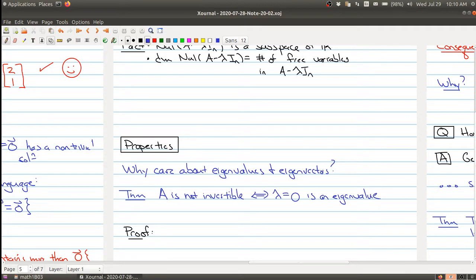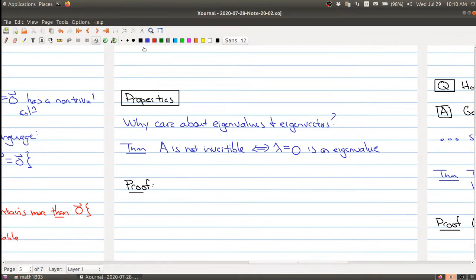And let me give you a proof of that. It's just a couple lines long. We know that lambda equals zero is an eigenvalue. It's the same thing as saying that A times X equals zero times X has a non-trivial solution.